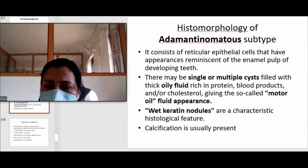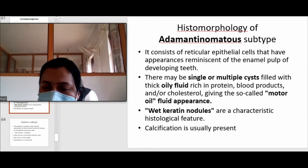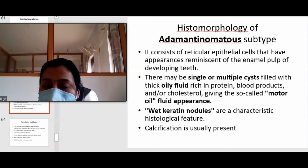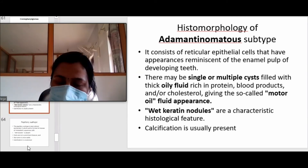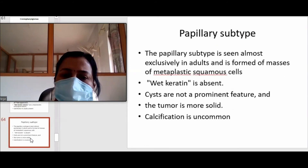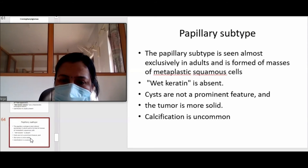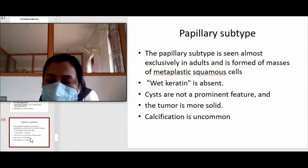Histologically, there are wet keratin nodules in the adamantinomatous type. Keratin refers to the superficial cells of stratified squamous epithelium, and because it is cystic it has the appearance of wet keratin nodules. The enamel pulp-like cells also have a squamoid and reticulated appearance. The papillary subtype is different — it almost exclusively occurs in adults, forms masses of metaplastic squamous cells, lacks wet keratin nodules and calcification, and is usually solid.